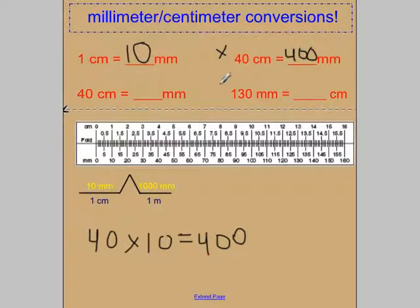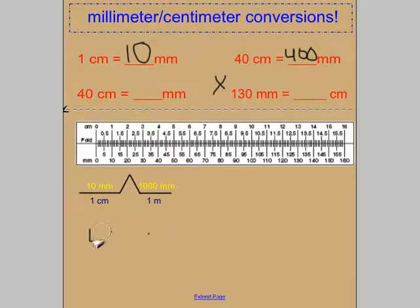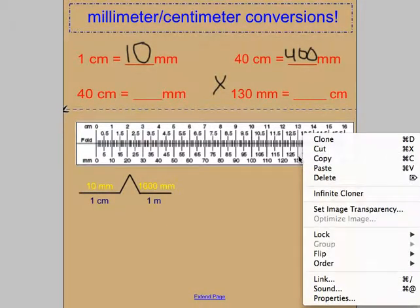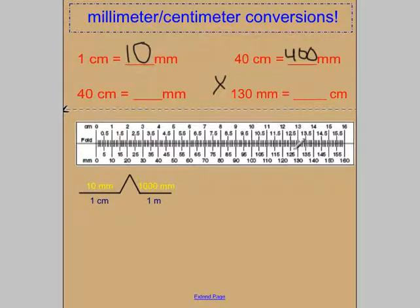We can also go from millimeters to centimeters. Let's go to the one down below. If I had 130 millimeters, how many centimeters would that be? Well, on my ruler, I don't have... Oh, actually, I do. I take that back. Lucky me. I was going to say I don't have 130 millimeters, but I do. And it's right here. So I could look up and see that it's 13 centimeters. Or I can also notice that I've chopped off that zero because I've divided by 10. Remember that there's 10 millimeters in 1 centimeter. So to go from millimeters to centimeters, I can just divide by 10.